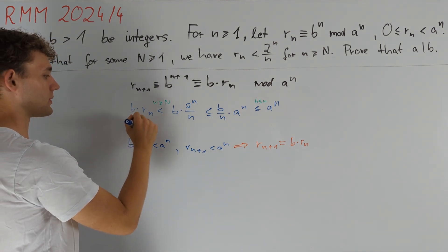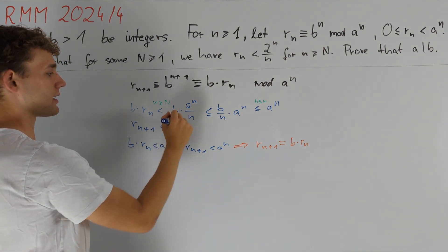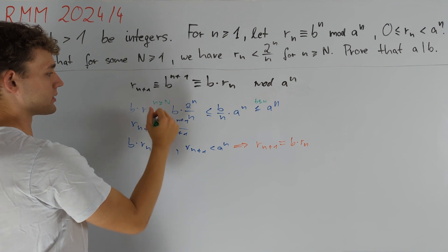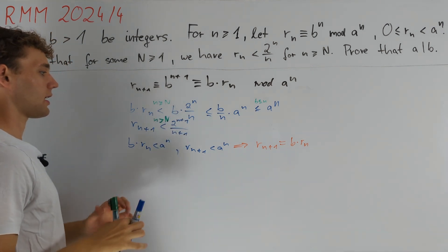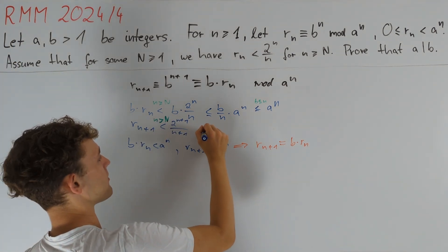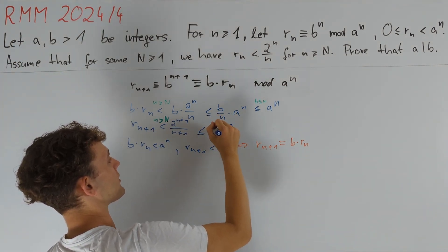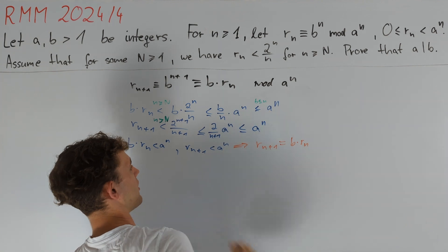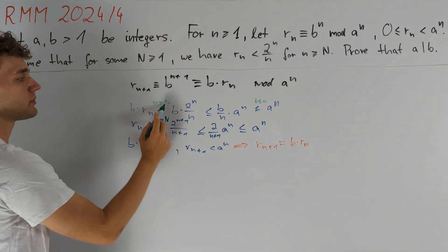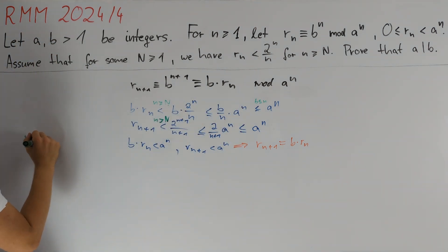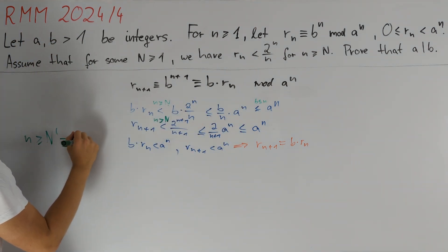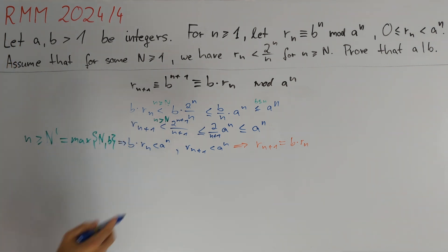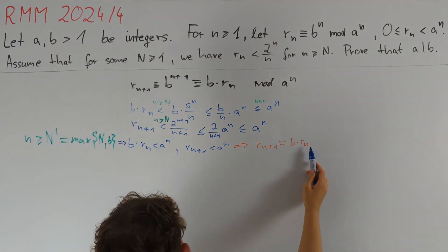Proving this works almost the same way as before. We have r_{n+1} < 2^{n+1} / (n+1), at least when n+1 ≥ N, or just n ≥ N. Now we can bound 2^n from above by a^n and we will be left with 2/(n+1), which is less than or equal to 1, and therefore this is just less than or equal to a^n as desired. In conclusion, if n is greater than or equal to the maximum of capital N and b — which we might as well call n' — then the two desired inequalities hold, which implies by the orange implication that r_{n+1} is indeed equal to b times r_n.